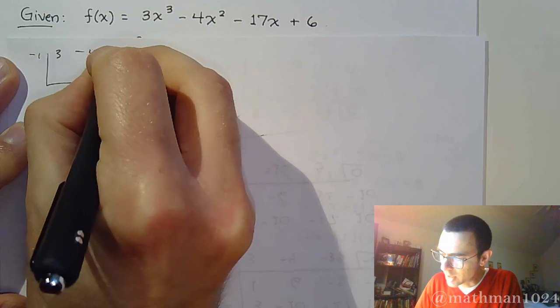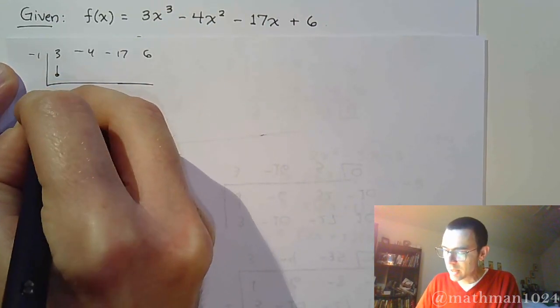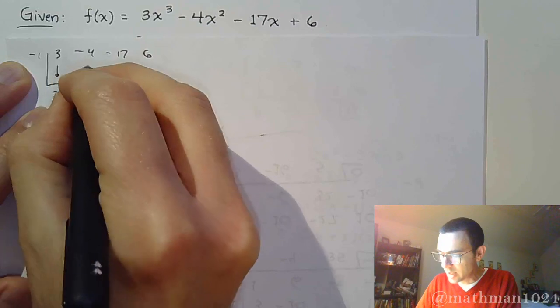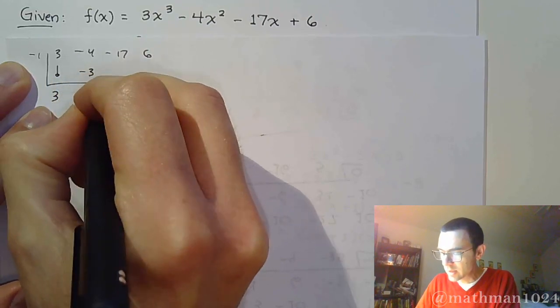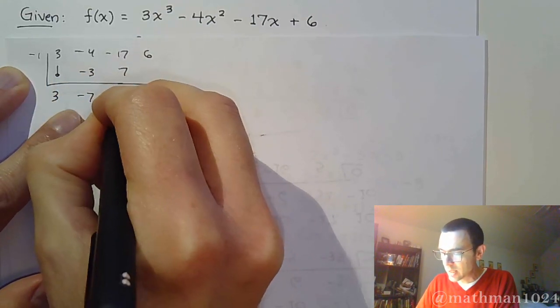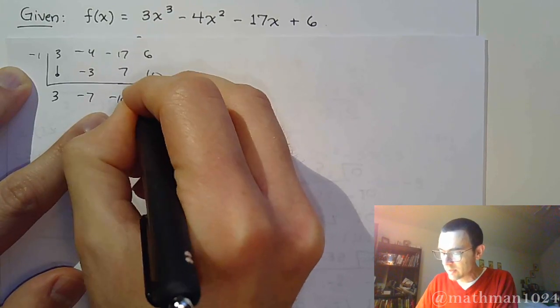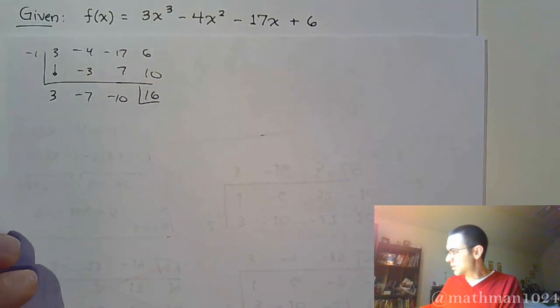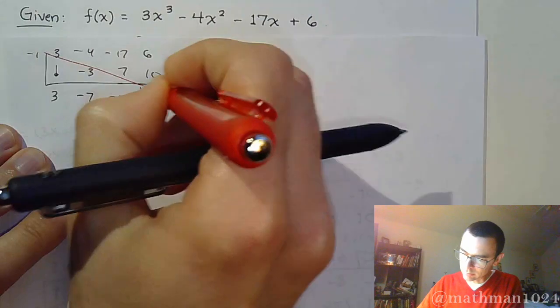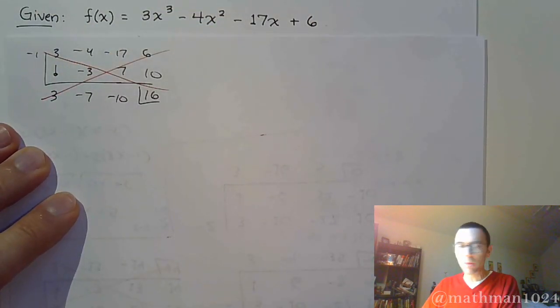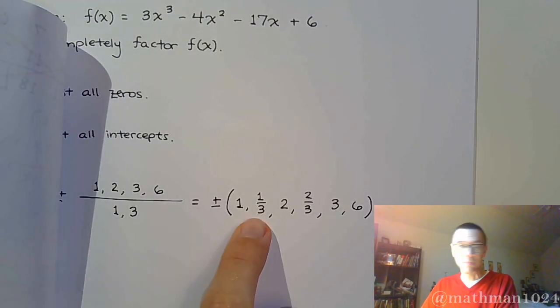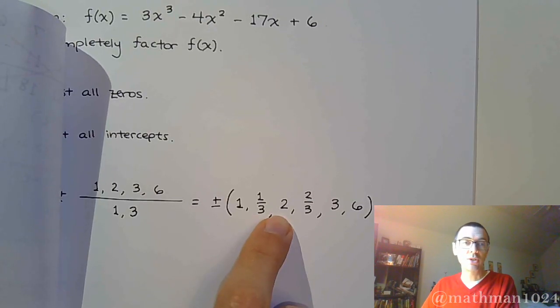I'm not trying to be neat here. 3, negative 4, negative 17, and 6. Bring down the 3. Times 1 is negative 3. That gives me negative 7. Positive 7 gives me negative 10. Positive 10, that's 16, so that does not work out. All right, what was the next nice number that we had here? I'm not going to do 1 third. Let's try 2.